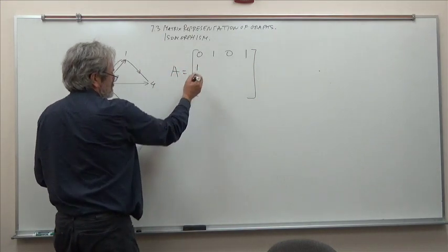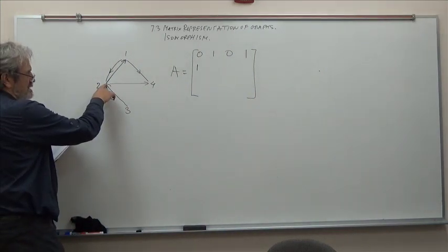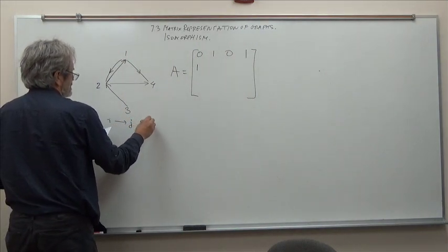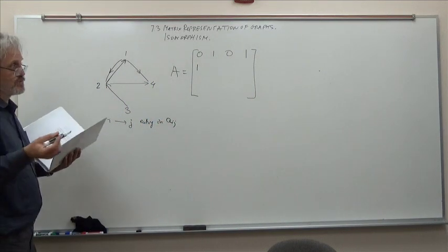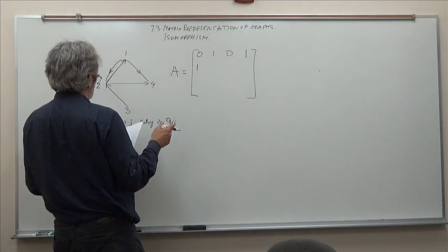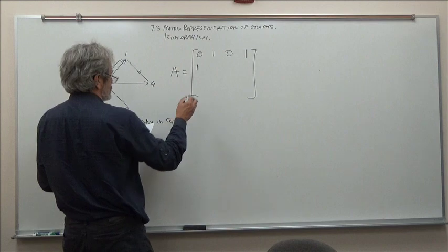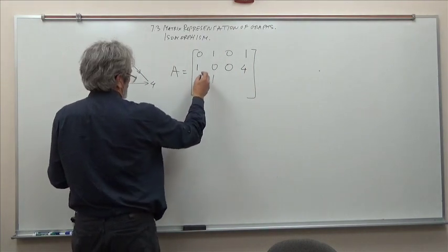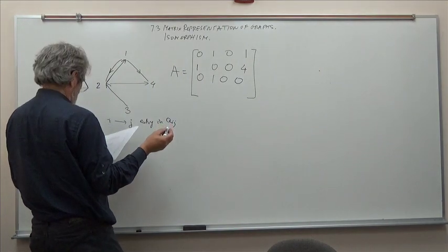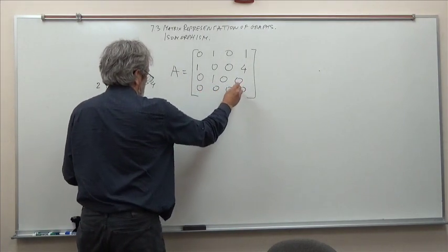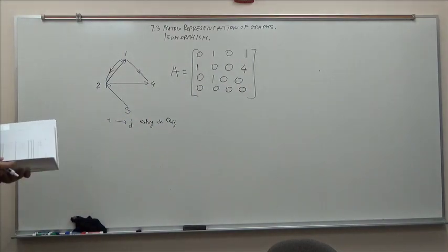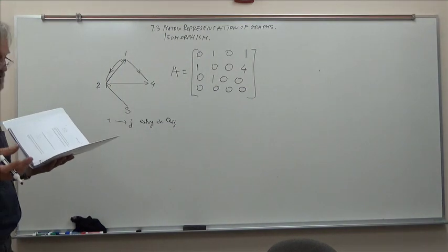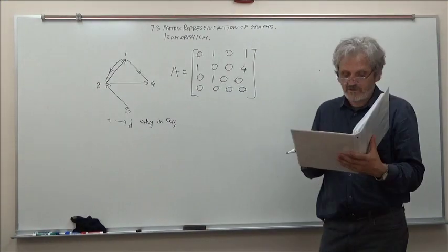Row 2: entry 2,1 will be 1 because there is an arrow starting at 2 going to 1. If there are more arrows it could be 2, 3, 4 for multigraphs. From 2 we don't have 2,2 or 2,3 but we do have 2,4. From 3 we only have 3,2. From 4 we have nothing — all zeros because there is no sending, just receiving. This matrix contains the same information as our graph, and that's why it's a good way to store information about the graph.